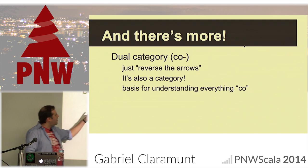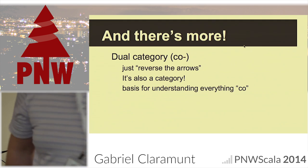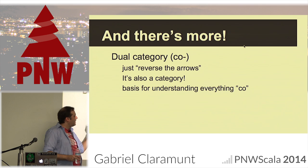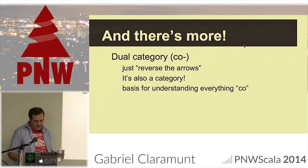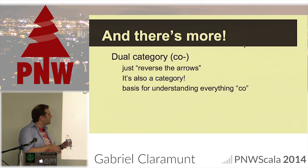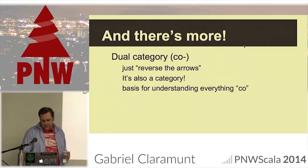Every time you see 'co-' it means the same category — the dual category where you reverse the arrows. And since it's another valid category, all category theory results still apply.